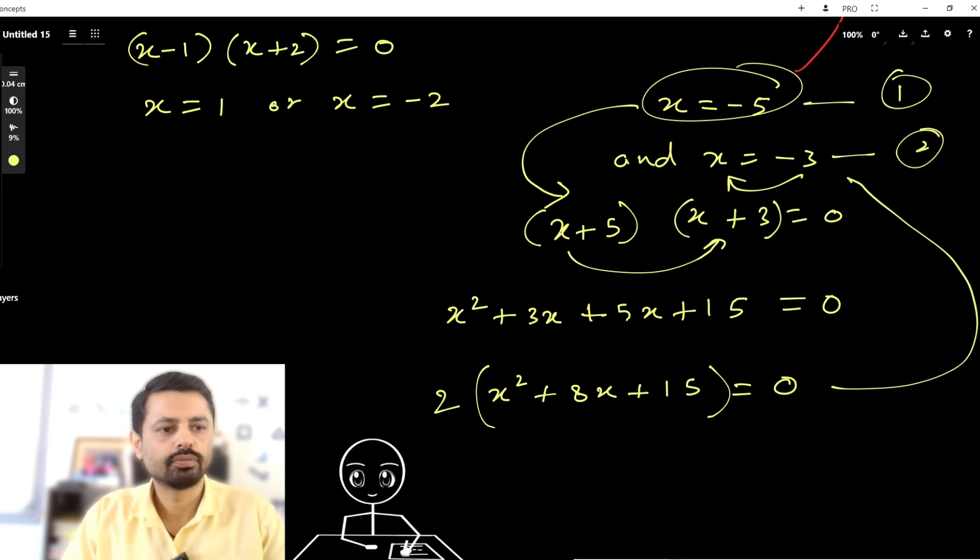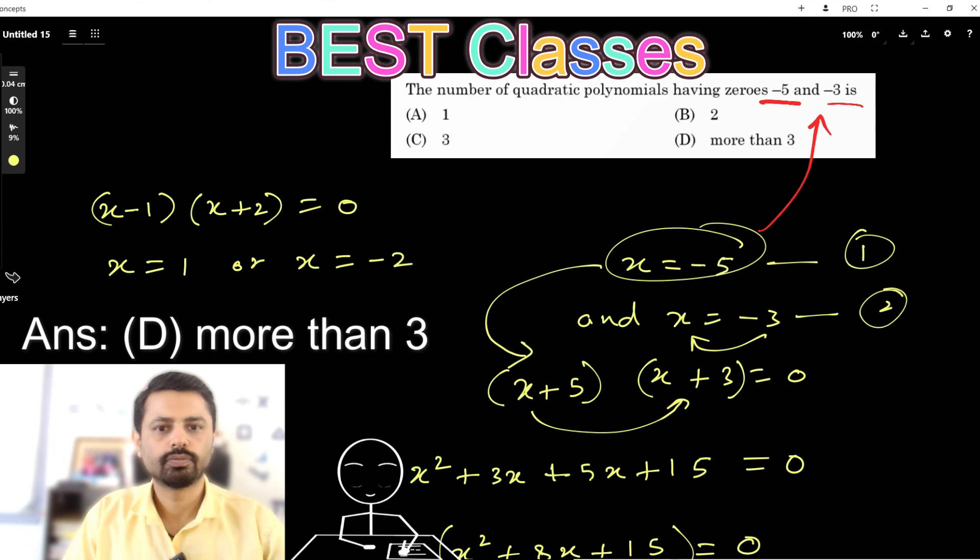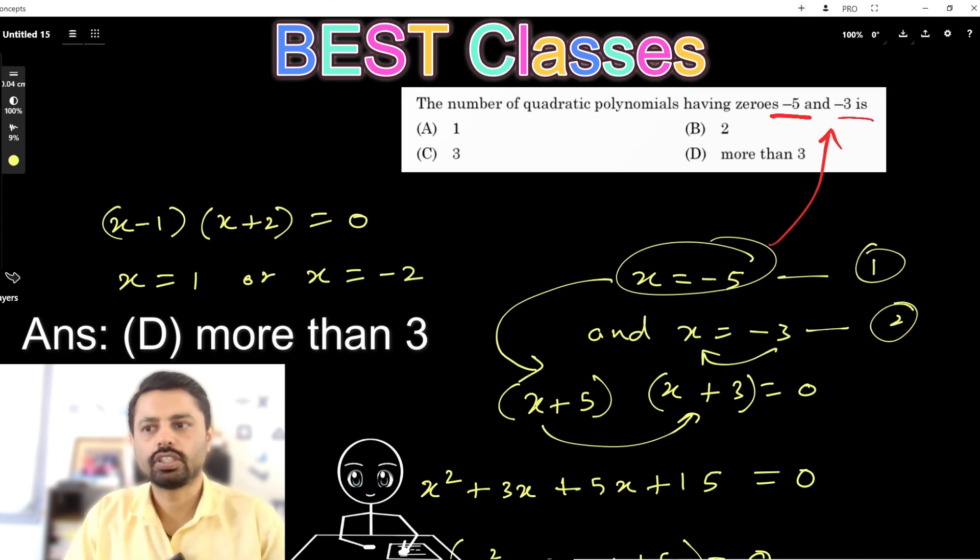And if you multiply with 3 or any number, the number of polynomials you can make where zeros will be again x equals -5 and -3... therefore you can have more than 3 or so many, almost infinite number of polynomials with this question. So 'more than 3' is the correct answer.